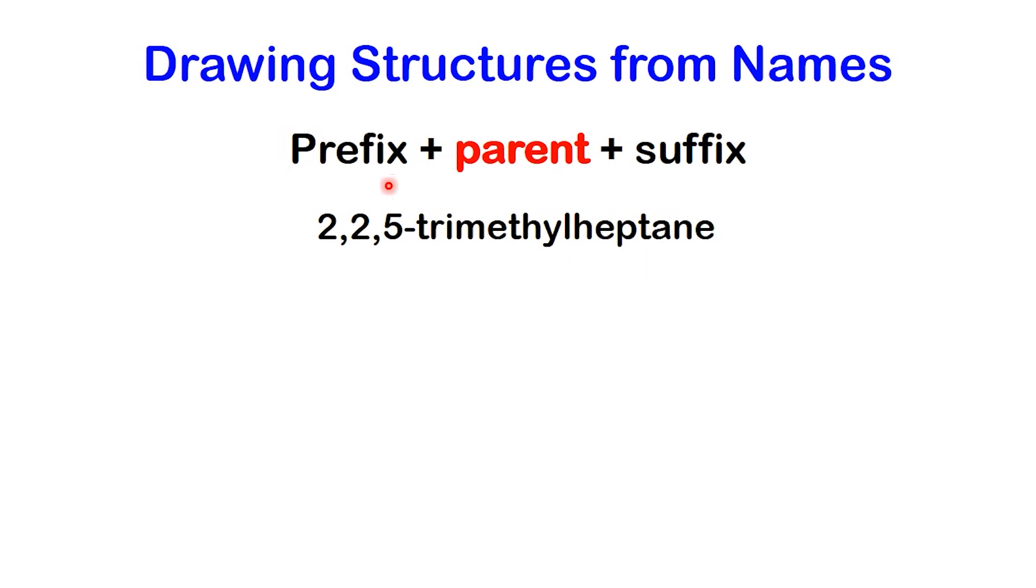All right, let's try one together: 2,2,5-trimethylheptane. We'll start with the parent. The word heptane has two parts. The root hept tells us that the main chain contains seven carbons.